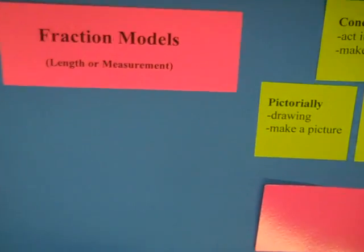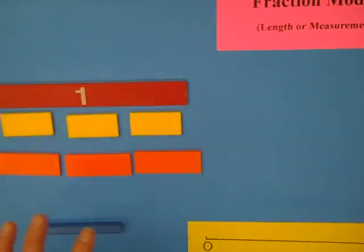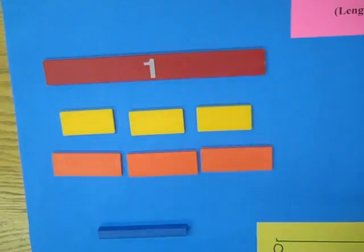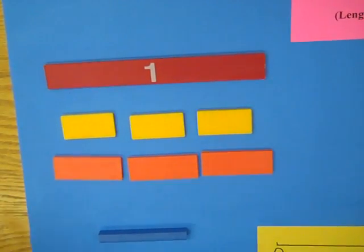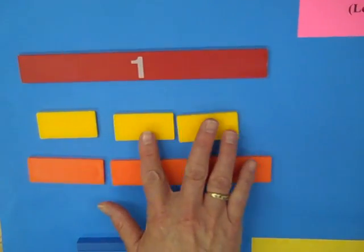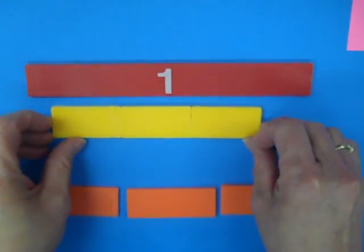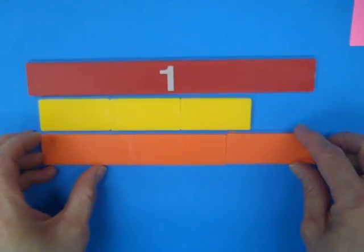Students often have difficulty moving from area to length and not making the connection. So if we were doing fraction strips, for example, and we want to make models of two-thirds, first of all we need to find out which one of these equals one.